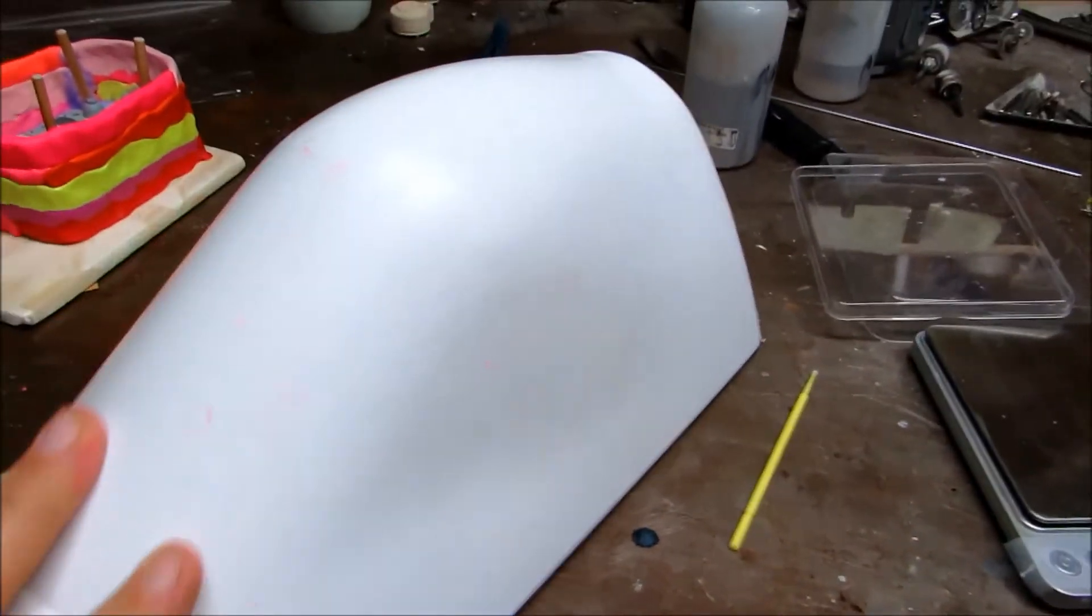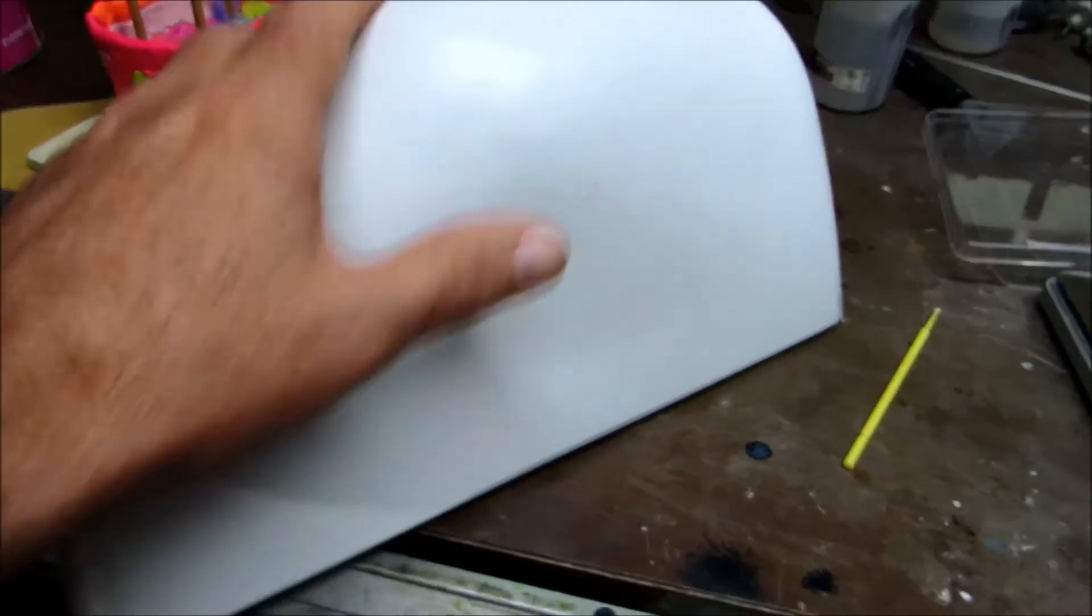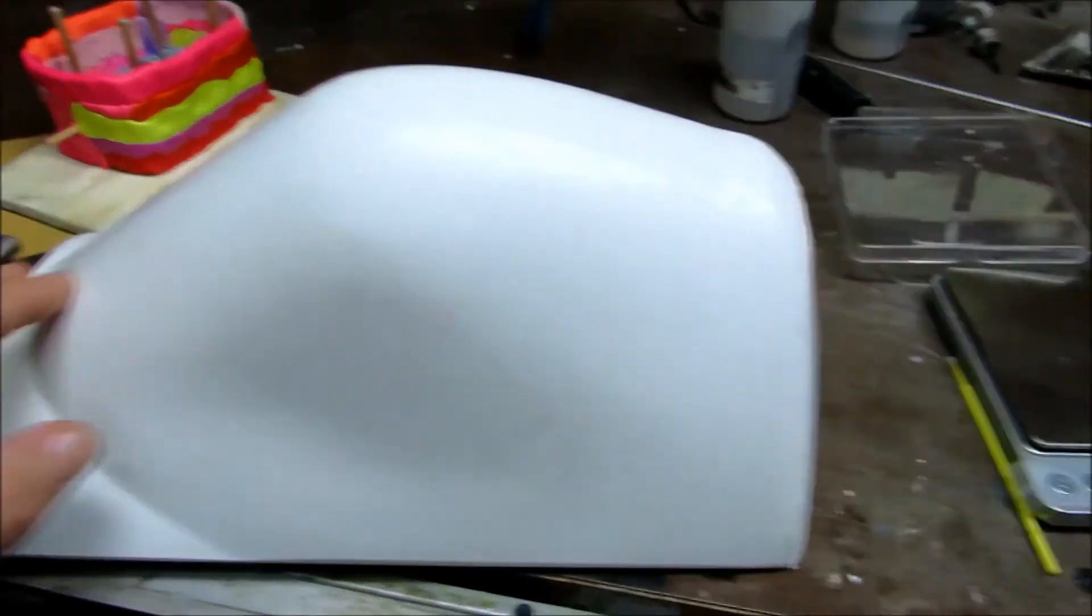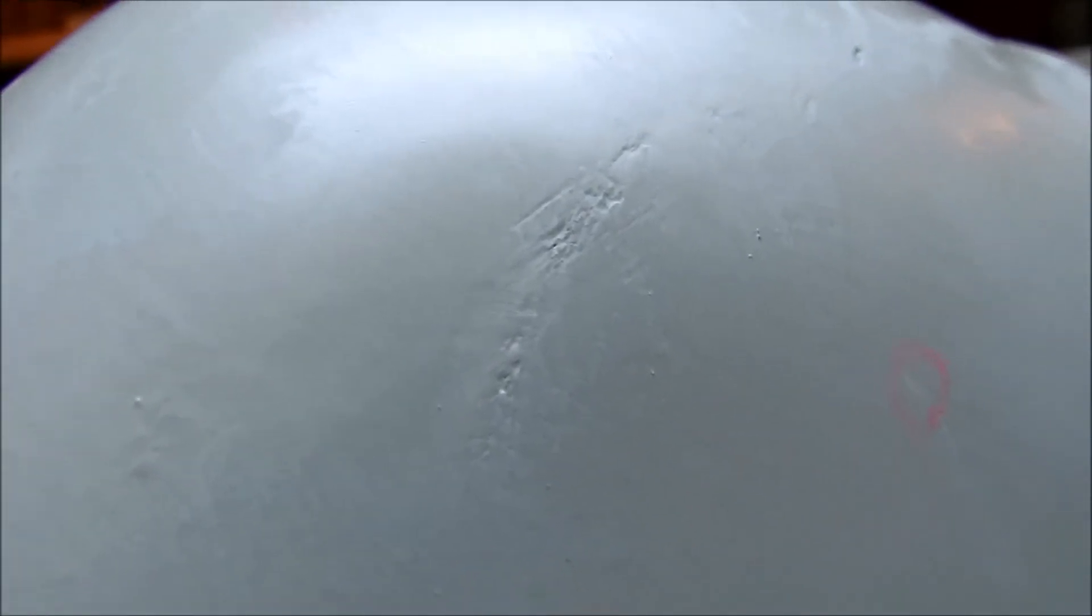So I just shot some two-part epoxy primer—it's actually K&B super epoxy primer—and I basically just shot it on here as a final gauge. You can still see there are some minor imperfections here. That looks worse on the screen, but it's real, and that's why we prime, so we can see these kind of things a little more easily.